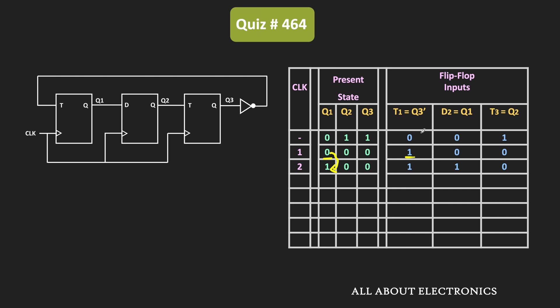As you can see, since T1 is equal to Q3', the new input for T1 will become 1 because the Q3 output is equal to 0. Similarly, since D2 is equal to Q1, the D2 input will become 1. And likewise, this T3 input will become 0. By repeating this procedure, these are the outputs for the subsequent clock pulses. You can pause the video and verify these results by yourself.